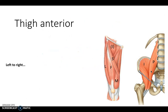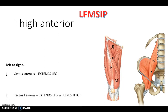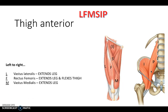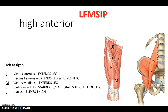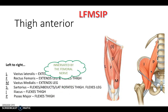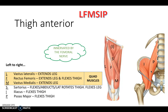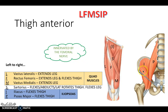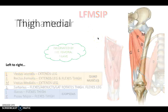Thinking anteriorly about the thigh, from left to right the mnemonic is 'LVRSIP': vastus lateralis, rectus femoris, vastus medialis, sartorius, iliacus, and psoas major. The first three are the quad muscles, which extend the leg. Iliacus and psoas major can be joined together as the iliopsoas muscle because they share a common insertion point. The sartorius muscle - commonly known as the strap muscle - runs diagonally across the anterior thigh. This compartment is innervated by the femoral nerve.